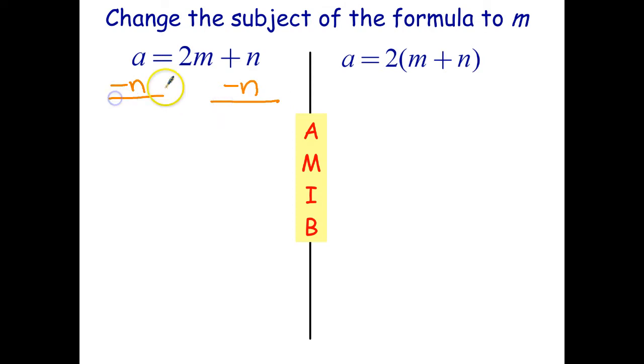So, to each side of the equation, I subtract n. I'm going to write my 2m on the left-hand side, because that's where I want the m to end up. And I'll write the a minus n on the right-hand side.